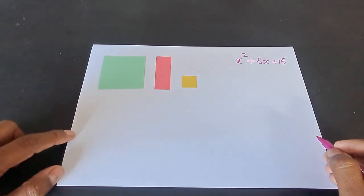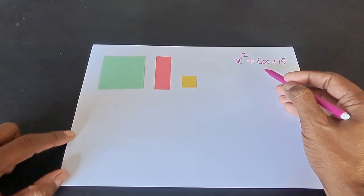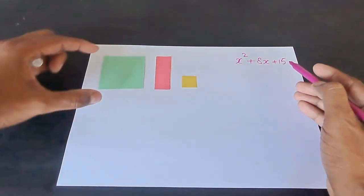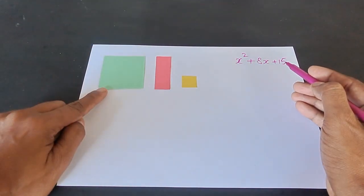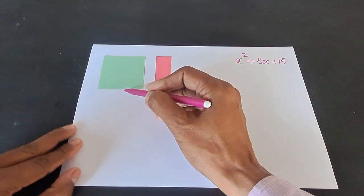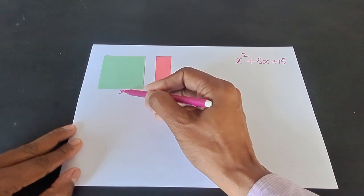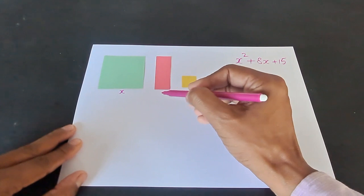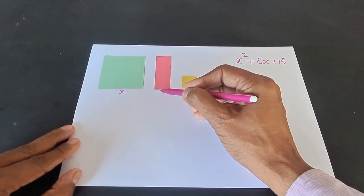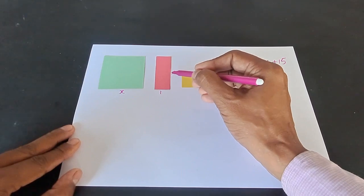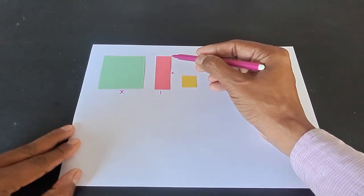For finding the factors of a quadratic polynomial like x square plus 8x plus 15, we require a square cutout of a colored paper sheet. The length of each side of this cutout is x. Then a rectangular cutout in which the width is 1 unit and the length is x units again. So, same as that of a square.